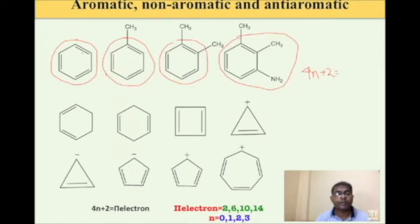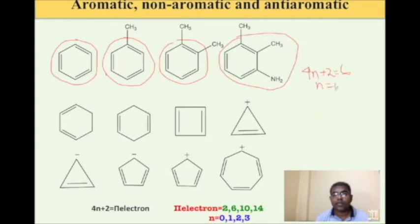How many pi electrons does benzene have? There are 6 pi electrons. The carbon that is not inside the ring is sp3 and we will not consider it — only the six carbon atoms of the ring. So 6 pi electrons means 4n+2=6, where n=1. N can be any natural number: 0, 1, 2, 3. For benzene, n=1 and there are 6 pi electrons. All these compounds will have n equal to 1.